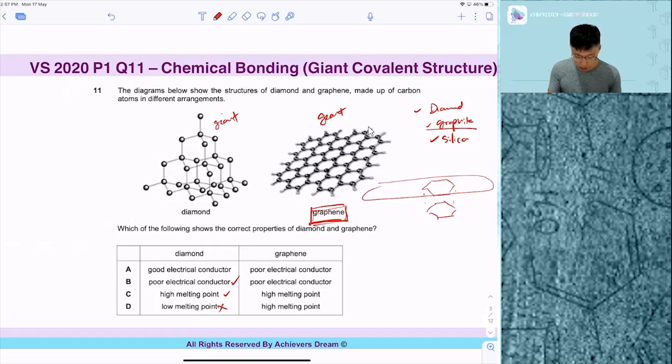The next thing, if you take a look at poor electrical conductor and high melting boiling point - over here, take a look that each carbon atom is bonded to three other carbon atoms. Since that's the case, it can conduct electricity. So if this is not true for graphene, that leaves C as the answer. You get it?